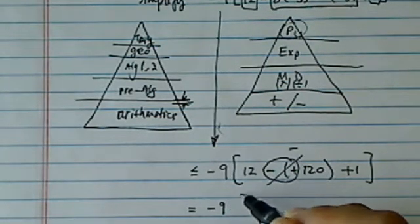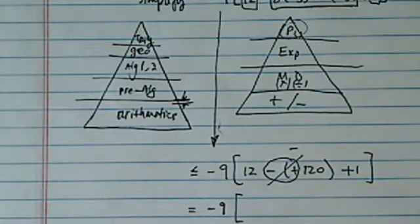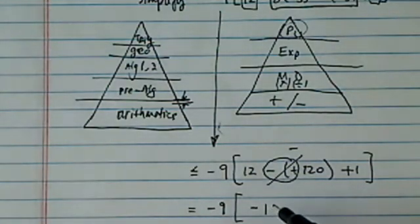So if we use that, we have minus 9, 12 minus 120, and then add 1. The answer is going to be negative, and it's 107.